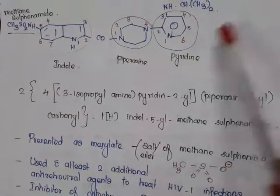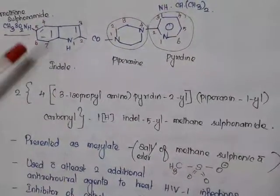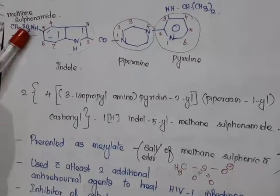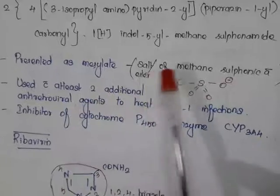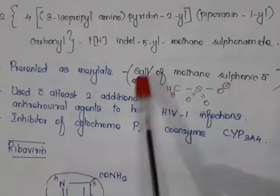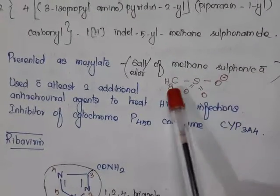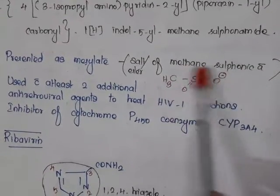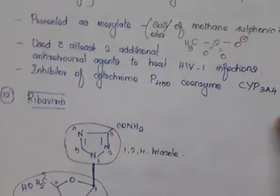To summarize delavirdine: it contains indole, piperazine, and pyridine; with pyridine having an isopropylamino group, and the fifth portion of indole having a methanesulfonamide group. This is presented as mesylate — mesylate means it is a salt or ester of methanesulfonic acid, which is CH₃SO₃H.